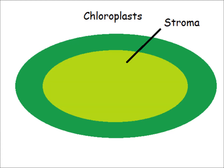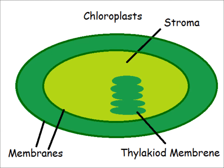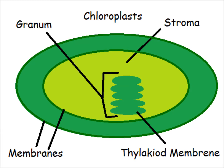There are six main components: the stroma, a gel-like matrix rich in enzymes; two outer membranes; the thylakoid membrane, which is enclosed within the granum; the grana, stacks of individual granum; and the grana, where photosynthesis occurs.